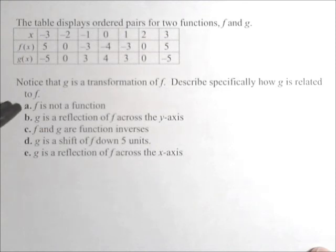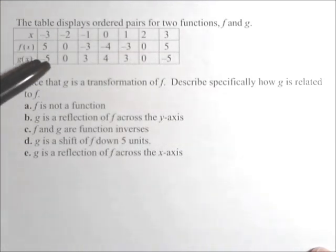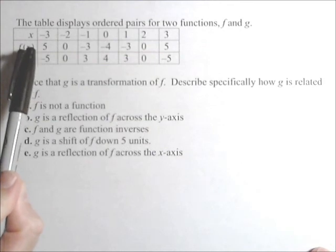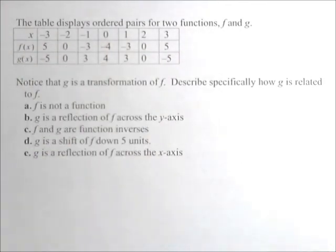So first thing, f is not a function. Well, both f and g are going to be functions because each input has a unique output. We can see that really quickly from the table because there's no repeated entries for the inputs. So both of them are going to be functions.